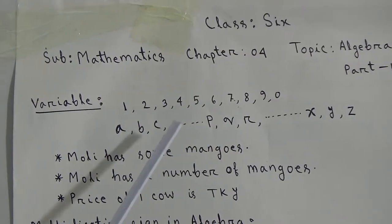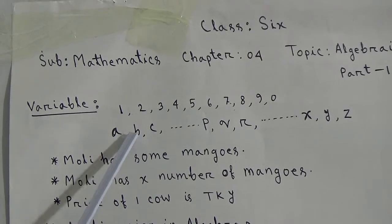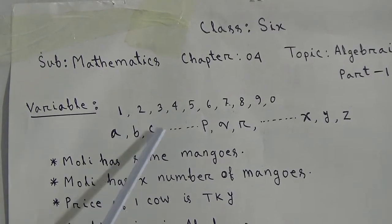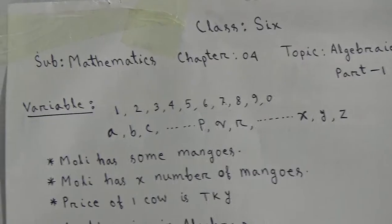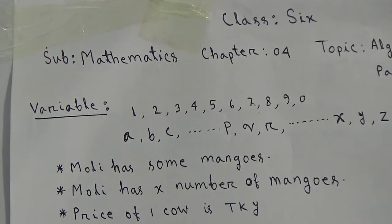But in algebra, besides these numerical symbols, we also use some alphabetical symbols such as a, b, c, dot dot dot, p, q, r, dot dot, x, y, z for expressing any unknown numbers.